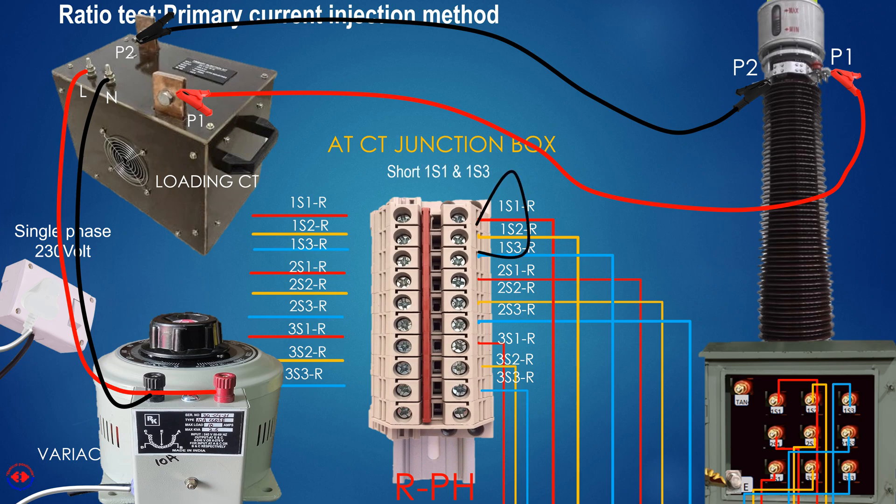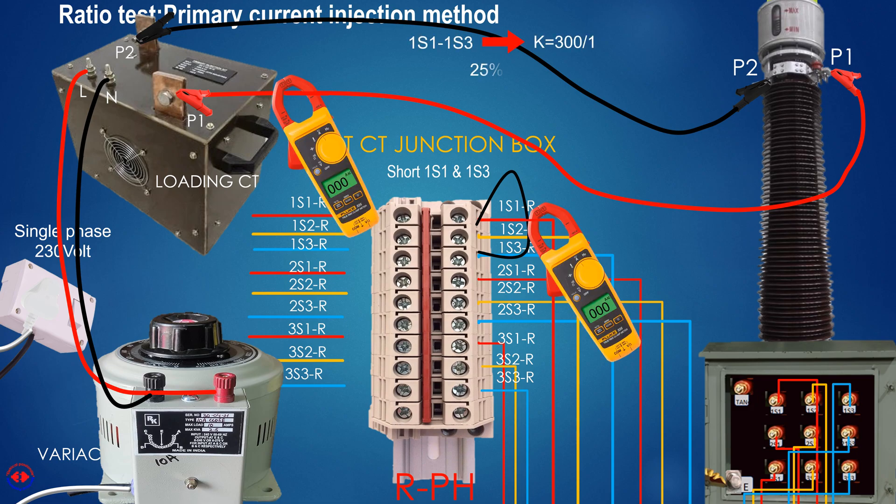After shorting both terminals, we connect clip-on meters on primary and on shorted secondary to get readings. By turning knob of variac, we can get the injected current to the test CT and current of shorted secondary terminals. Variac needs 230 or 240 volts of AC to start and provide the output.